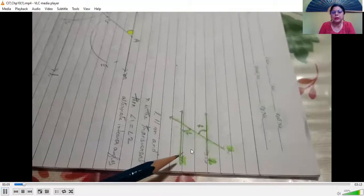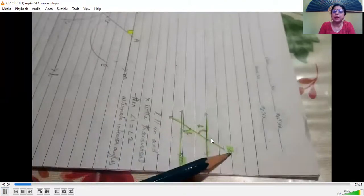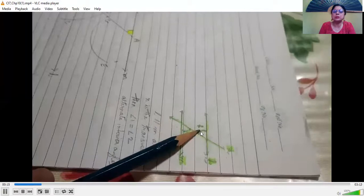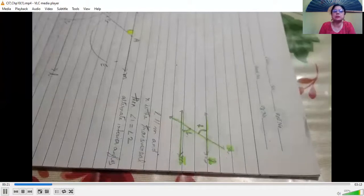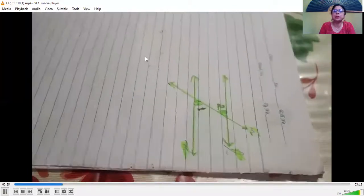Now here L and M are two parallel lines and N is the transversal. Then the alternate interior angles one and two are equal to each other. So let's start.